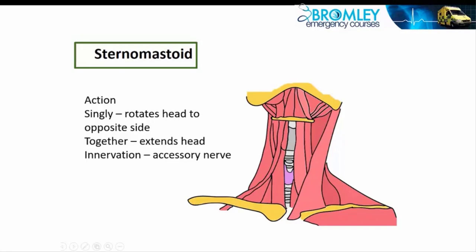The sternomastoid muscle is supplied by the accessory nerve — the 11th nerve, one of the cranial nerves. We test this in a clinical examination by getting the patient to turn the head to one side and then to the other, putting the hand against the side of the head as resistance to restrict the rotational movement. So we use it as a clinical neurological assessment.